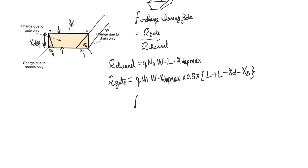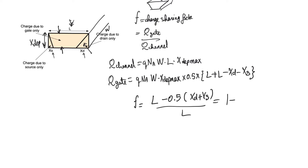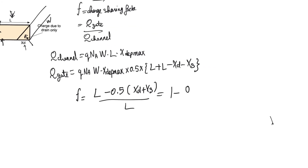If we divide Q_gate by Q_channel to obtain the charge-sharing factor F, everything other than geometry cancels out — W, X_dep_max, q, and N_a all cancel. We end up with F equals (L minus 0.5 times (X_D plus X_S)) over L, which reduces to 1 minus 0.5(X_D plus X_S) over L. Obviously, if L is much larger than X_D and X_S, this factor tends towards 1, as expected.